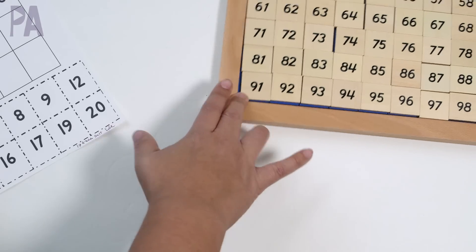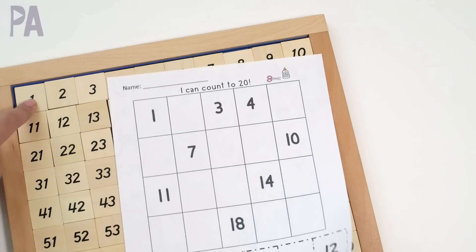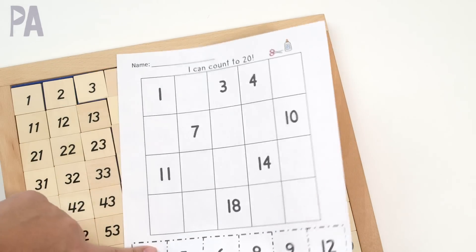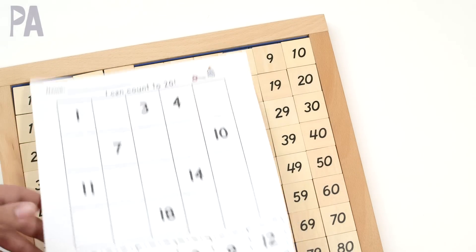If your child needs some help, they can refer to the 100 board tiles to see what needs to go there. So the 2 needs to go there, so they know to paste it there and they would just compare to the 100 chart.